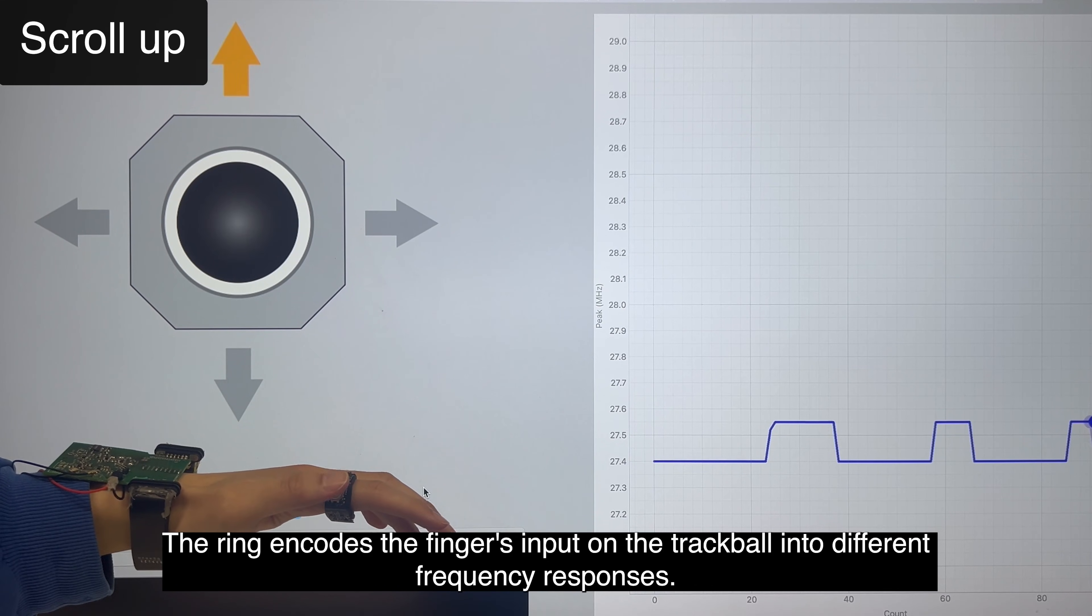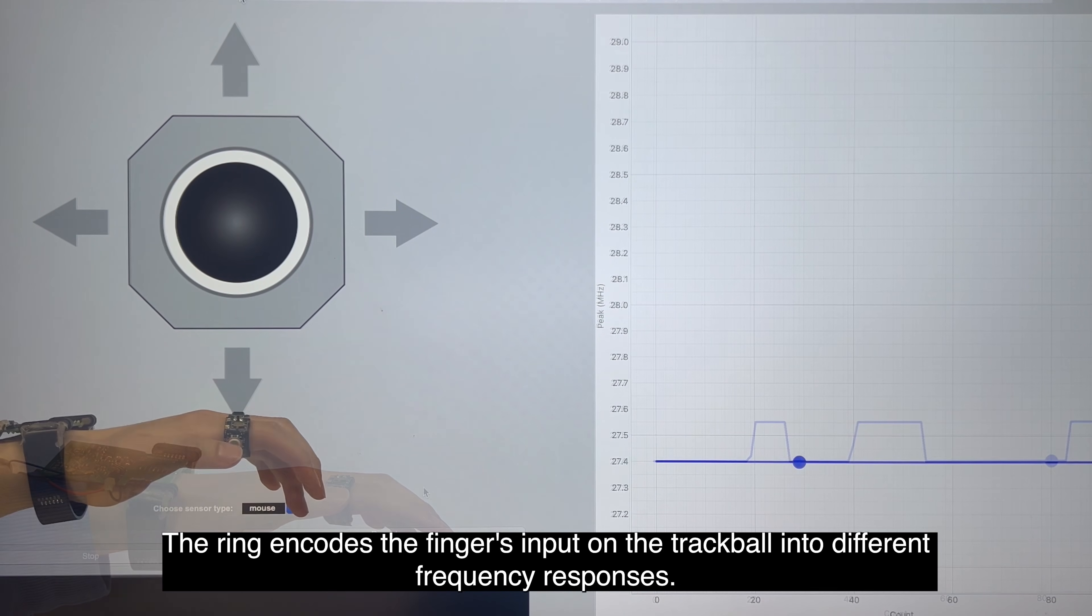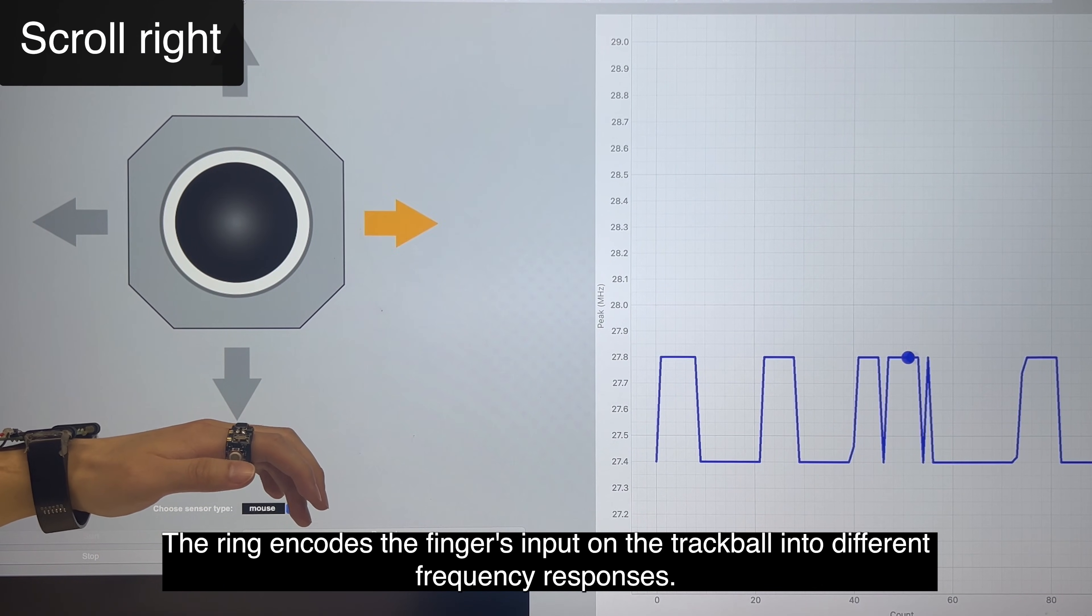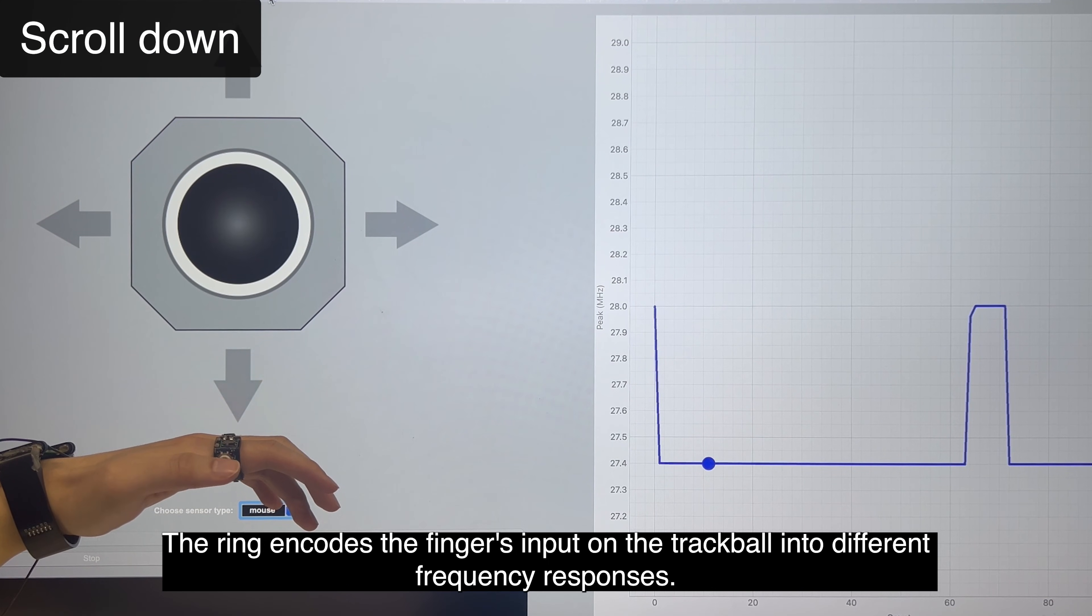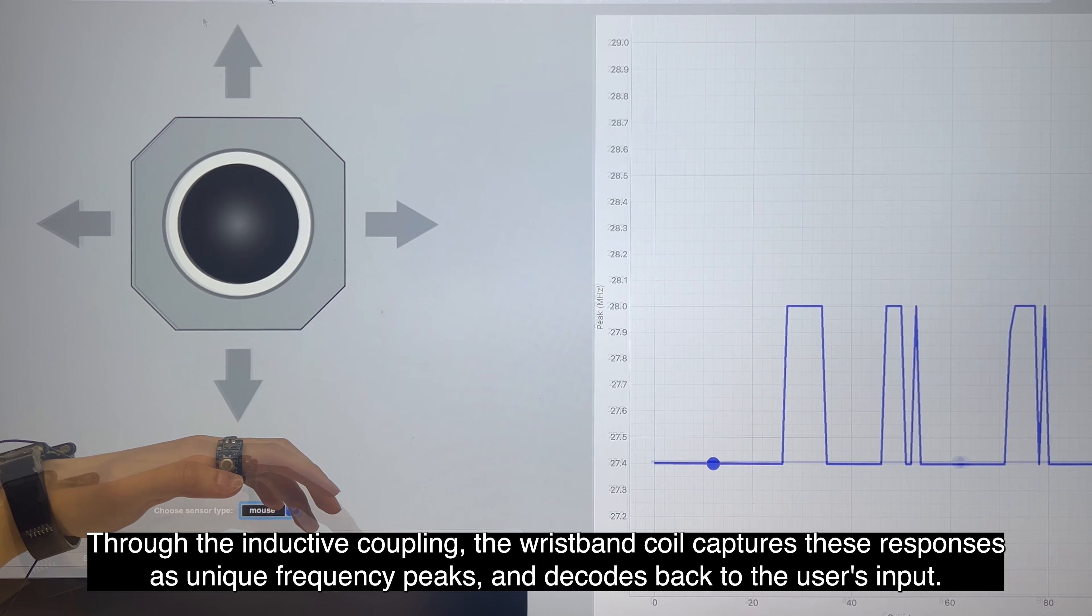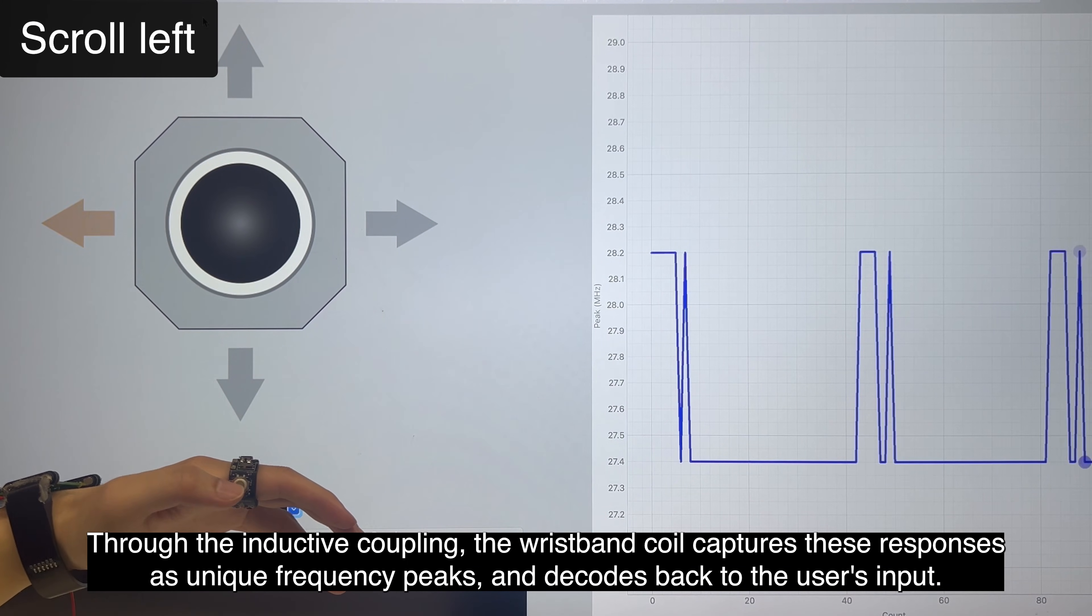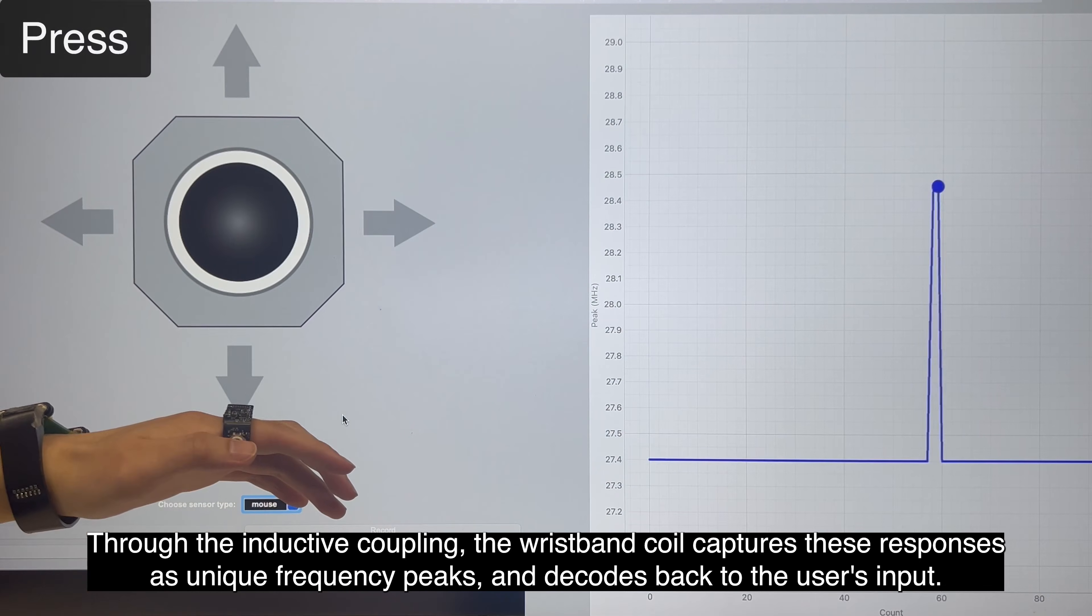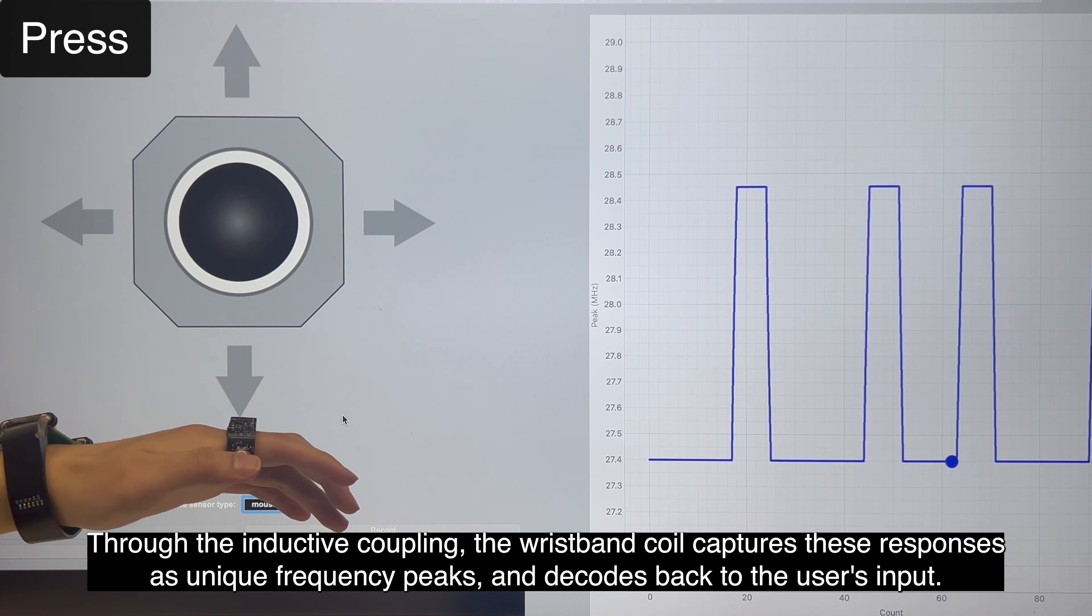The ring encodes the finger's input on the trackball into different frequency responses. Through the inductive coupling, the wristband coil captures these responses as unique frequency peaks and decodes back to the user's input.